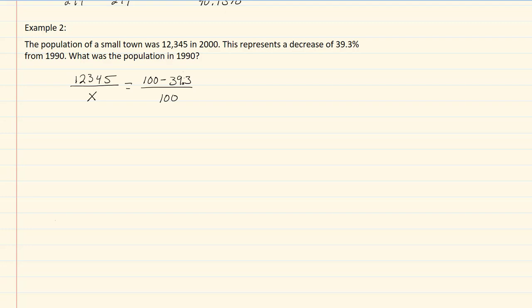We don't need to write our percents because they're not part of our calculation. So we get that 12,345 over x equals 100 minus our 39.3, and that's going to give us 60.7 over 100.